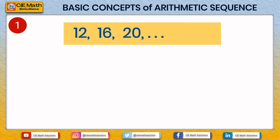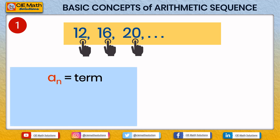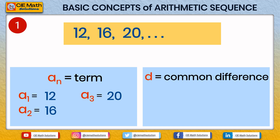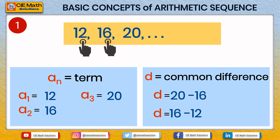For the first prerequisite, given an arithmetic sequence containing the terms 12, 16, and 20, these numbers are called the terms of the sequence, denoted by an. So a1, the first term, is 12; a2, the second term, is 16; and a3, the third term, is 20. The arithmetic sequence also has a common difference, denoted by d. Here d equals 20 minus 16, or 16 minus 12, which is equal to 4. The common difference of this arithmetic sequence is 4.